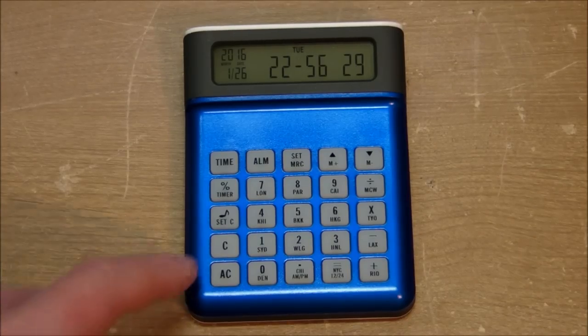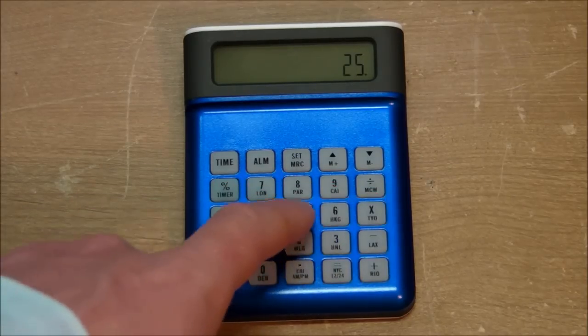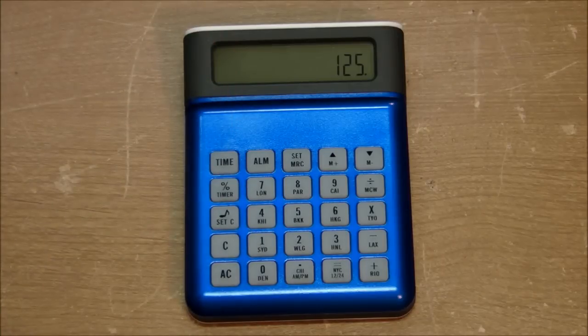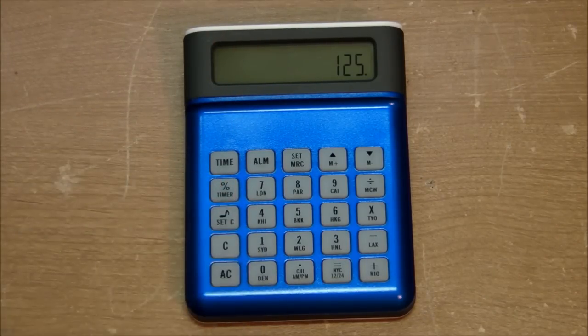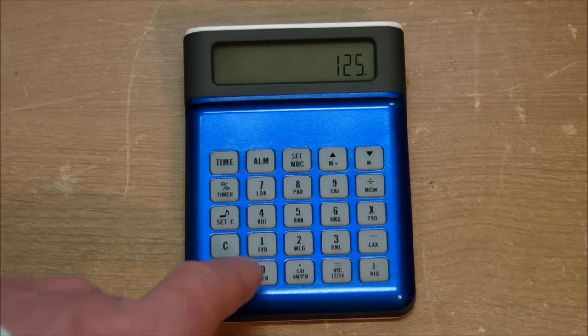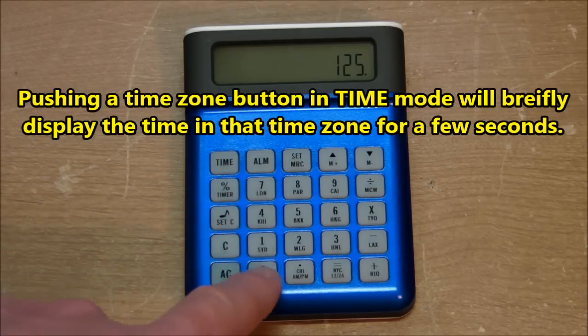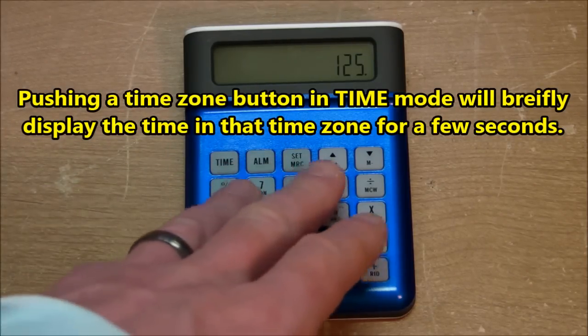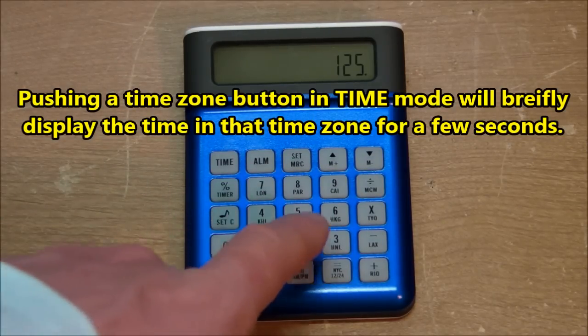As for the calculator, you just push C or AC to put it into calculator mode. And then it works quite nicely as a calculator for basic four function thing, and with little sales tax percent button on there too. And I find it really distracting that it has all the time zones displayed on the individual buttons here. It seems overkill that each time zone has its own dedicated button, and you don't really need that.